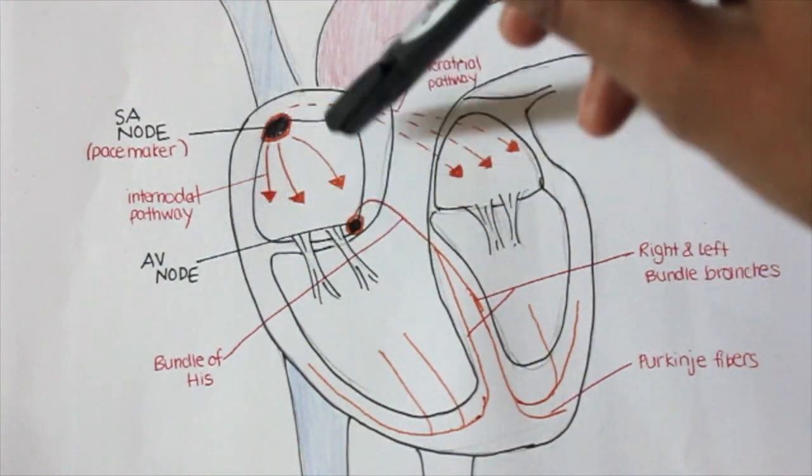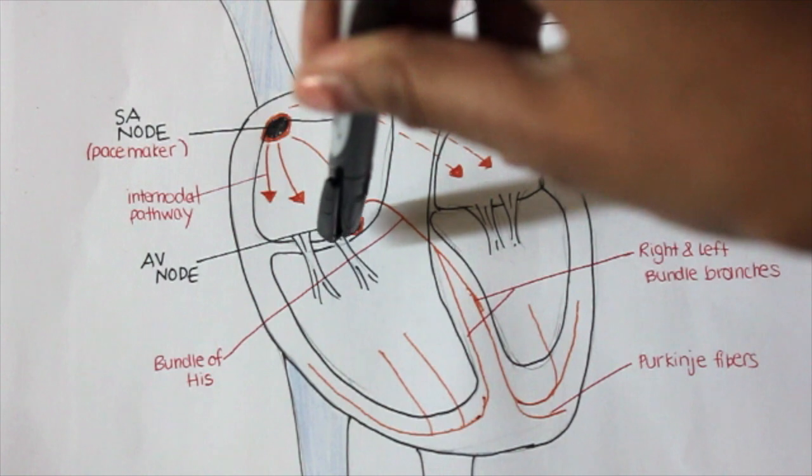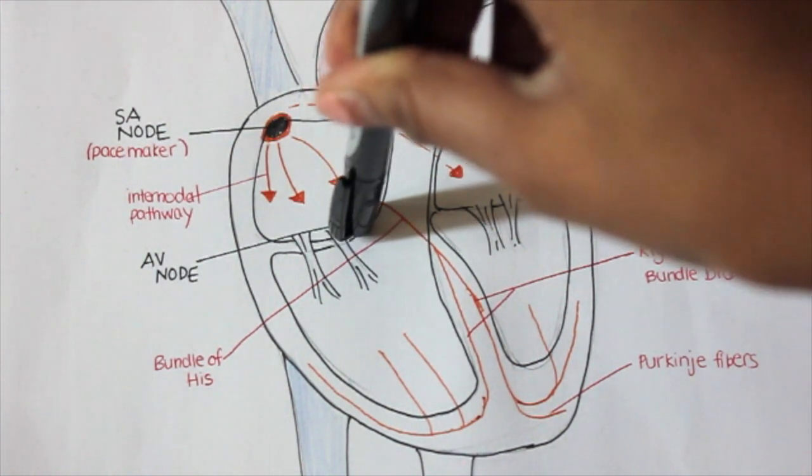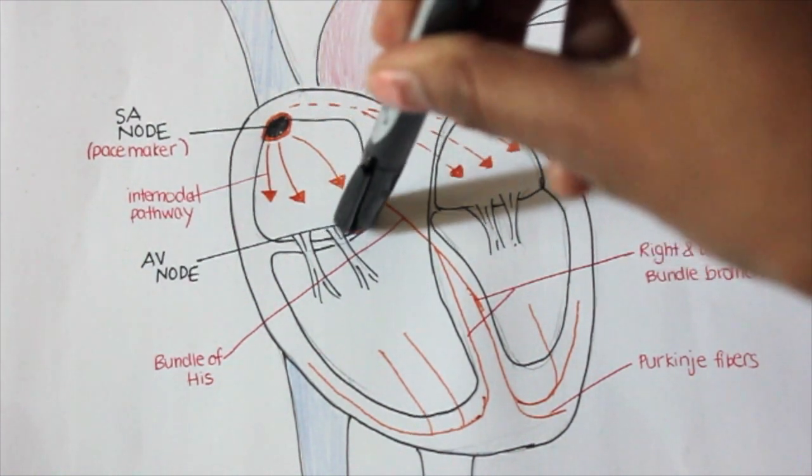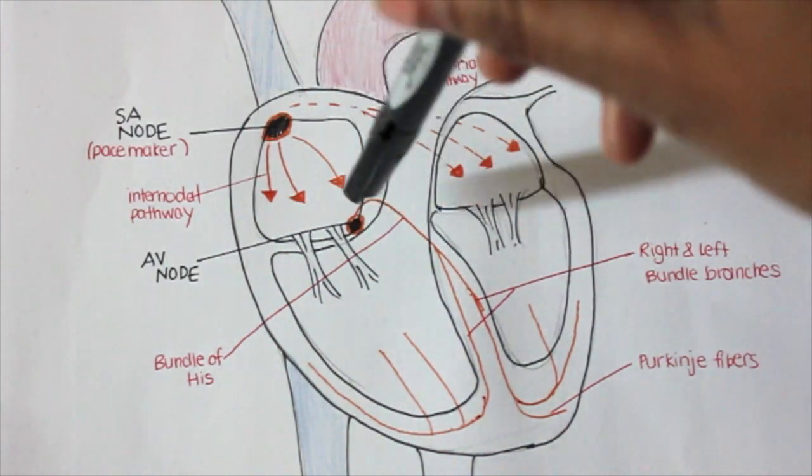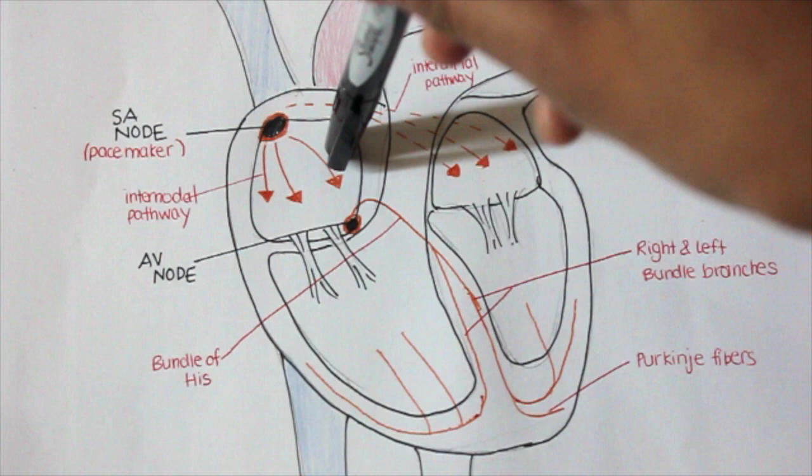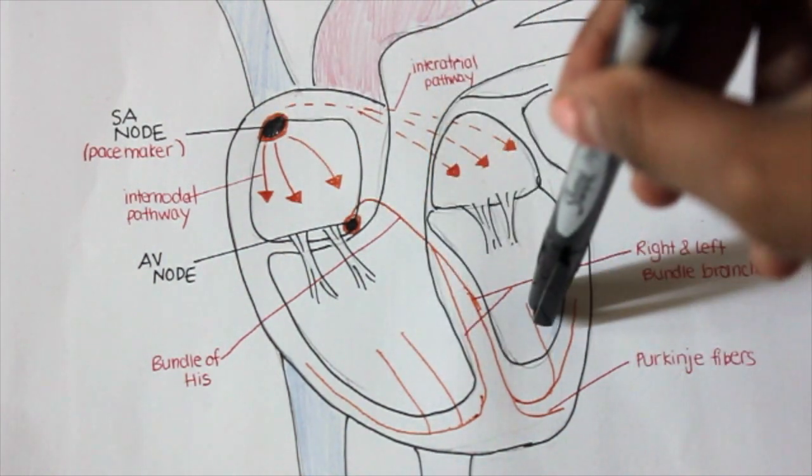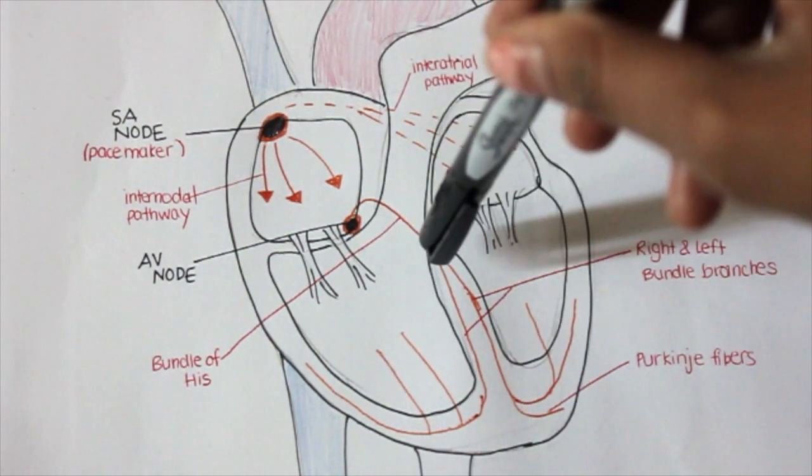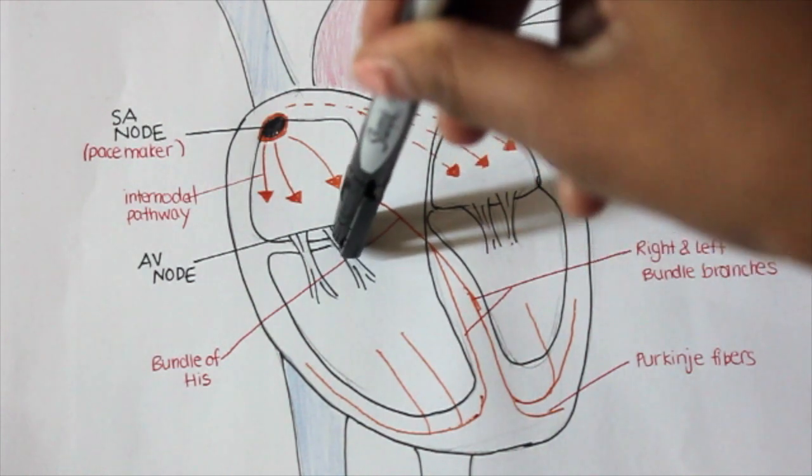After traveling down there, the impulse converges at the AV node, which slows down the speed of the impulse. This is necessary because we need to let the atria finish contracting and allow the blood to travel into the ventricles before we start contracting the ventricles. So there's a little pause there.